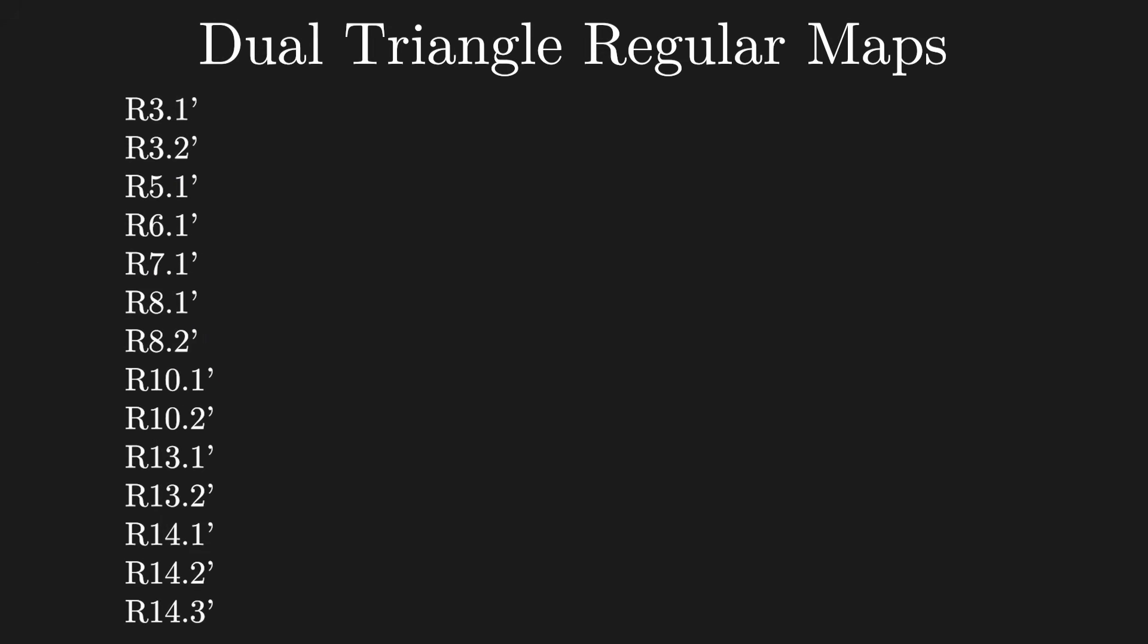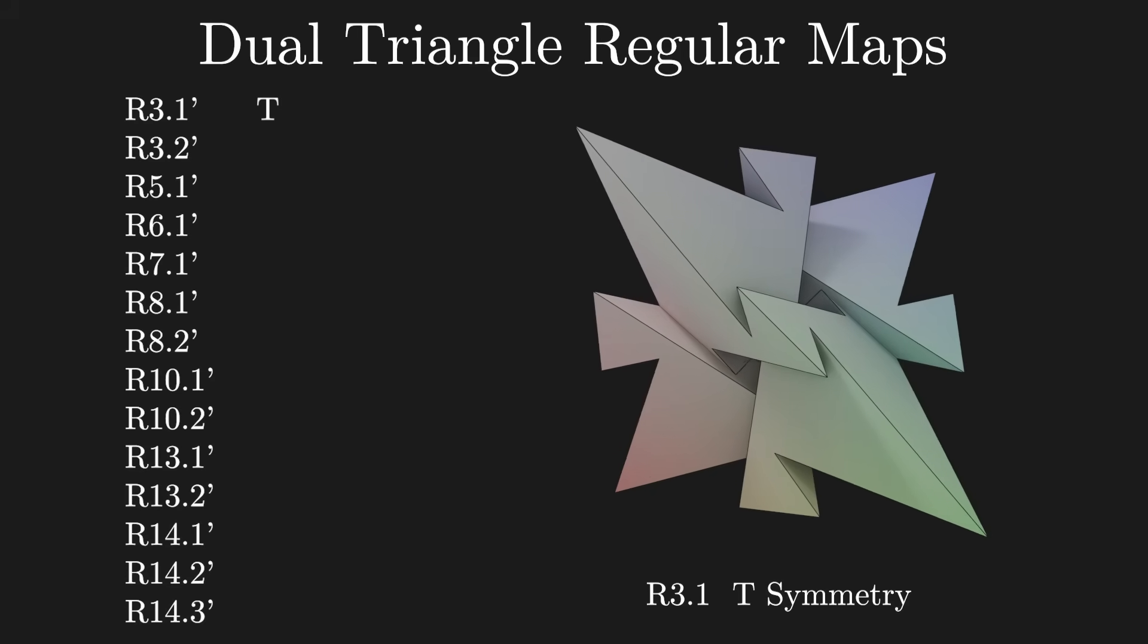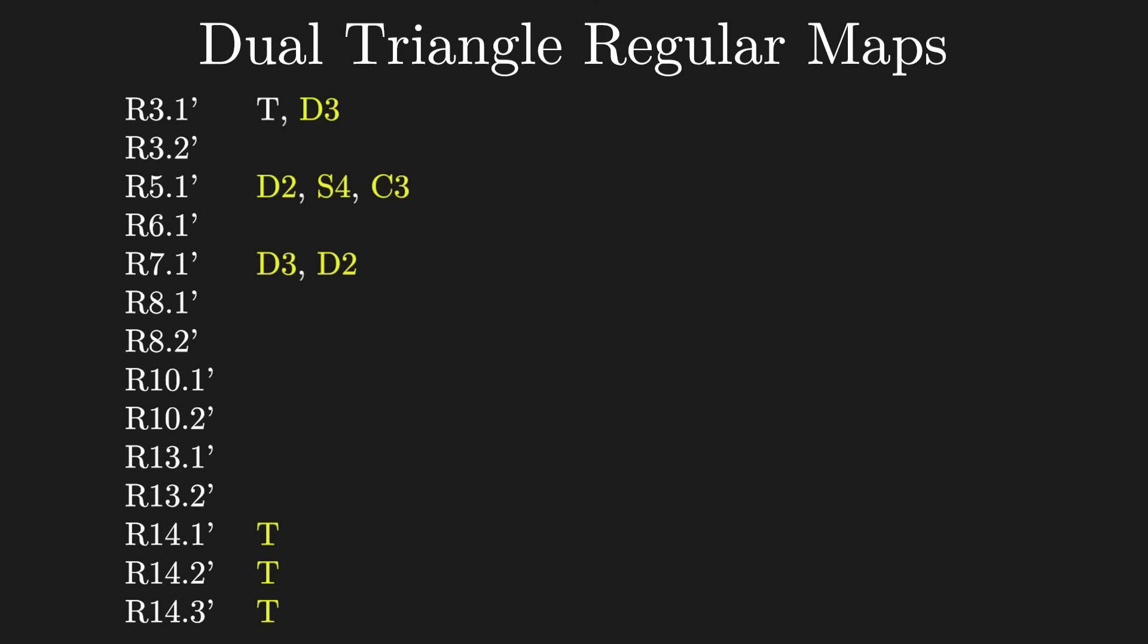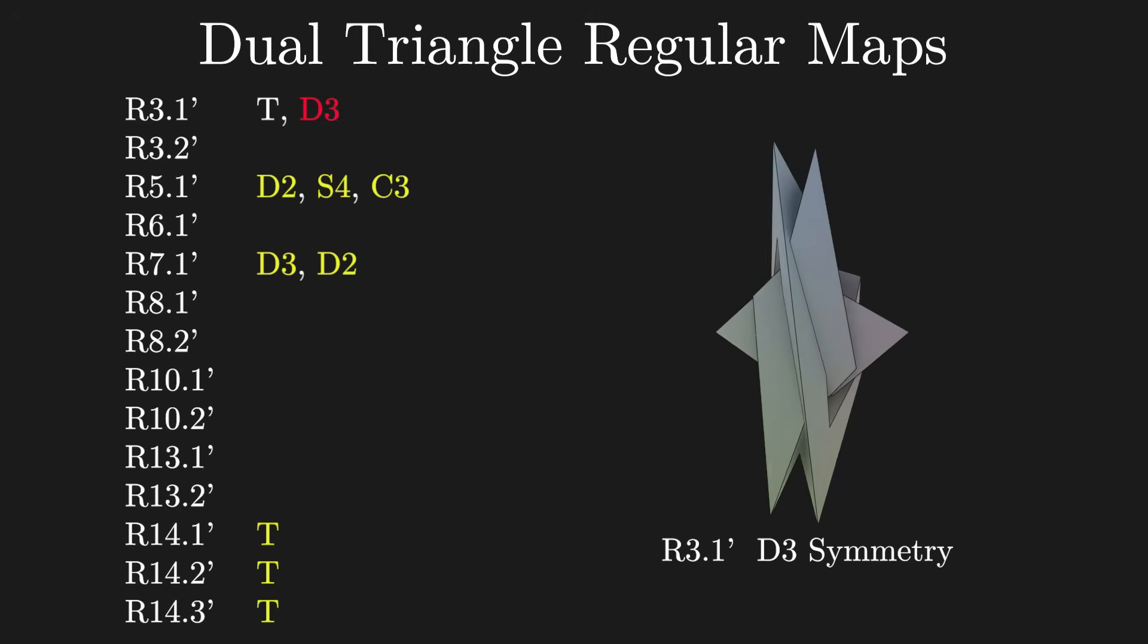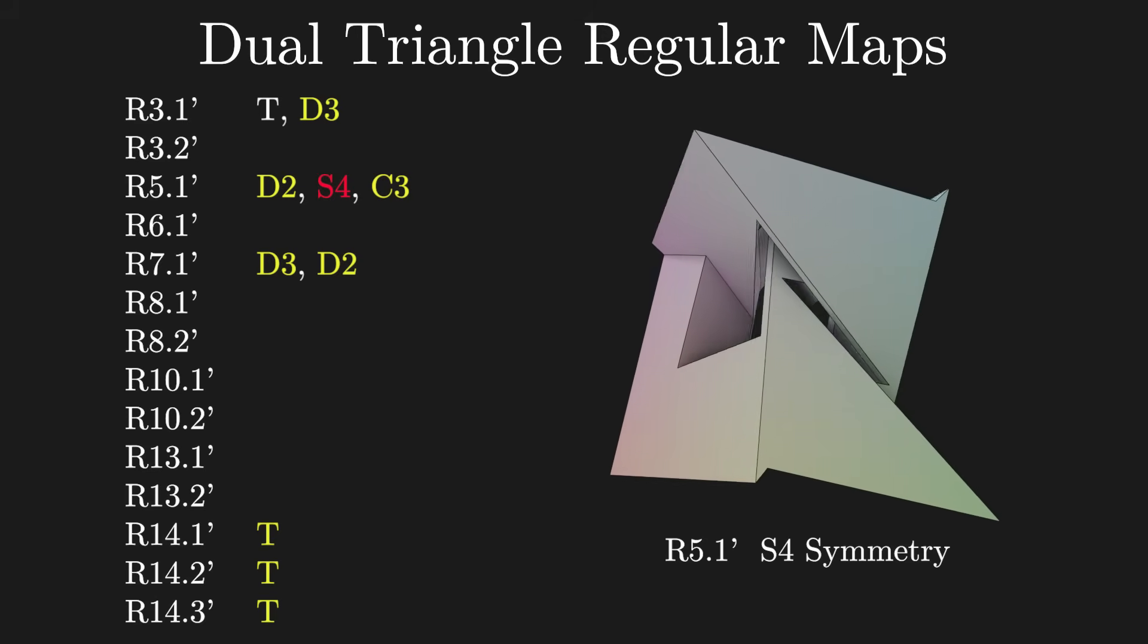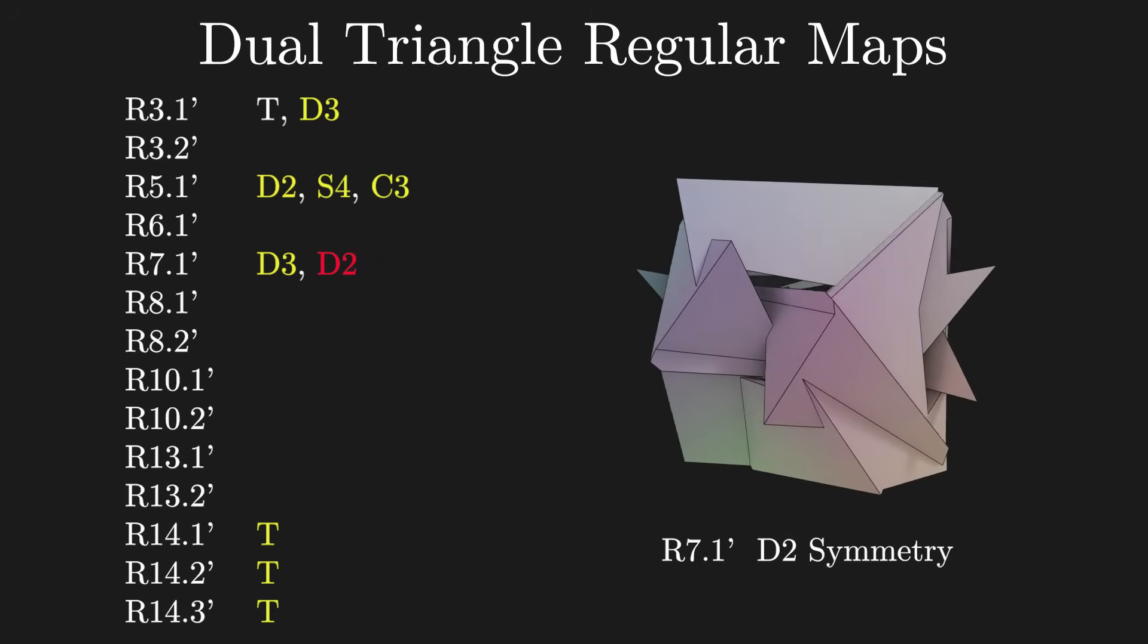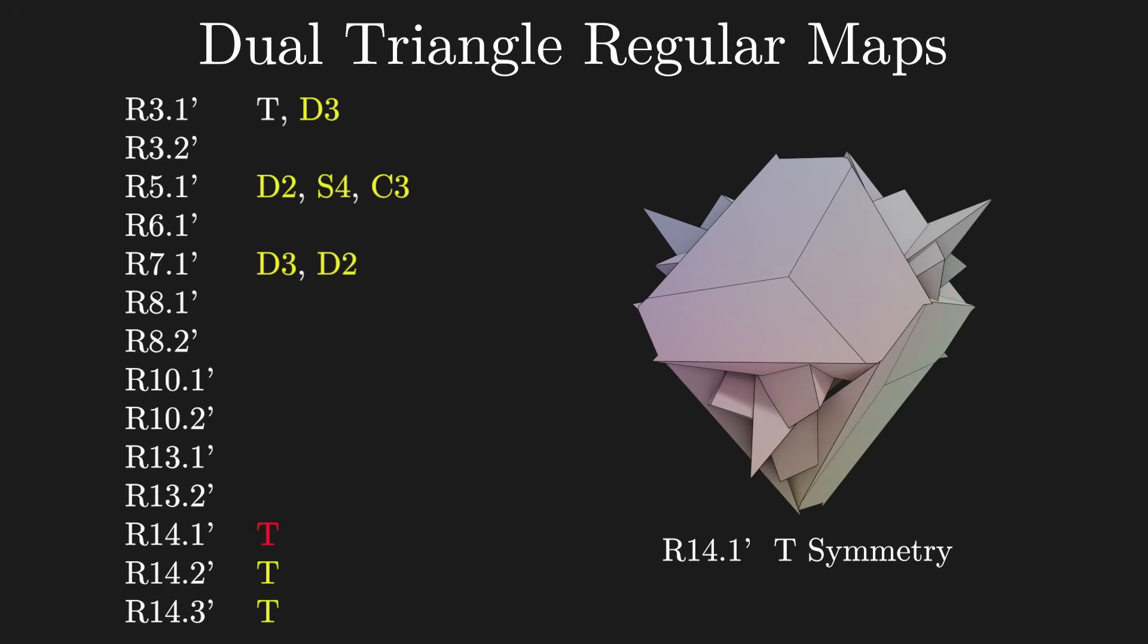And I didn't even talk about the duals. There was one known already, and due to the algorithm I'm using, duals of triangle maps are just as simple to solve as the originals. But they do tend to be less likely to have solutions. Still, I ended up finding five new embeddings, each with different symmetries.